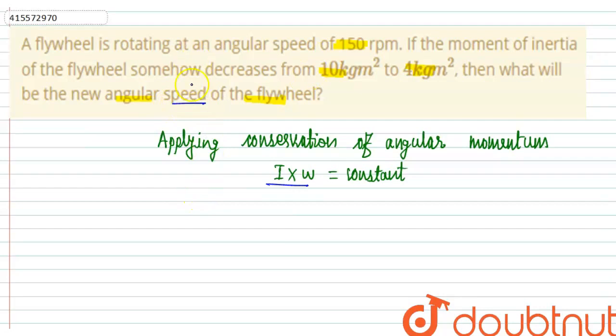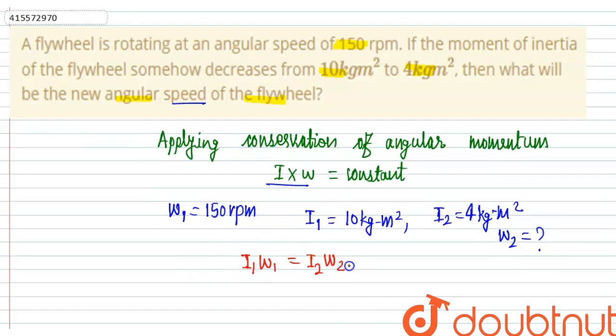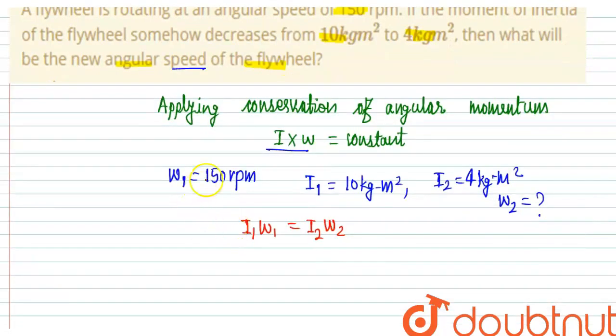We need to find the new speed of the flywheel. Initial speed omega₁ is 150 rpm, I₁ is 10 kgm², I₂ is 4 kgm², and we want to find omega₂, the new angular speed. So we write I₁ω₁ equals I₂ω₂.